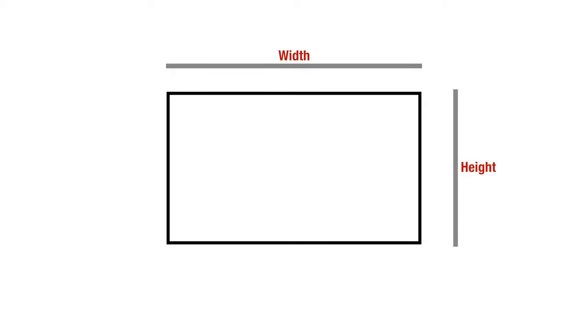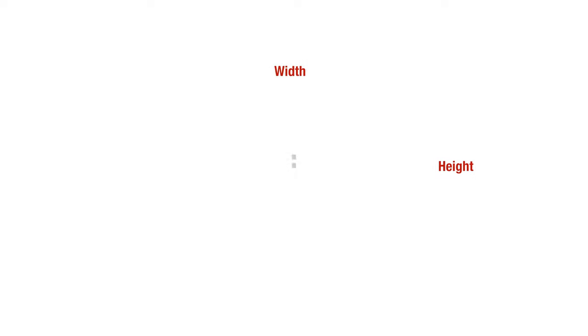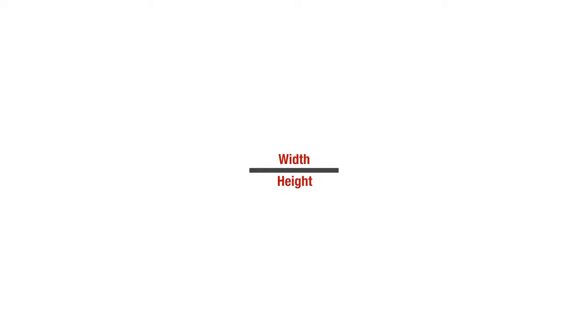Before we get into the history lesson, let's start by talking about what aspect ratio is. Aspect ratio can be described as the ratio of the width to the height of an image. It is usually expressed in the form of two numerical numbers, though it can sometimes be shown in the form of a decimal number.